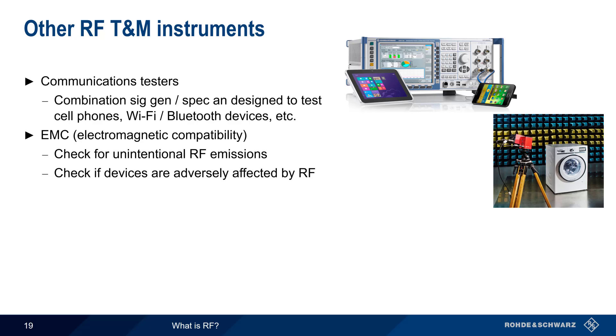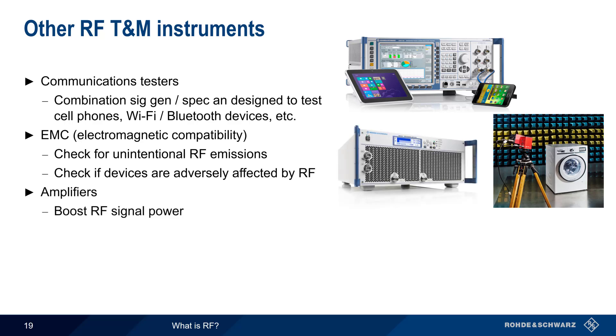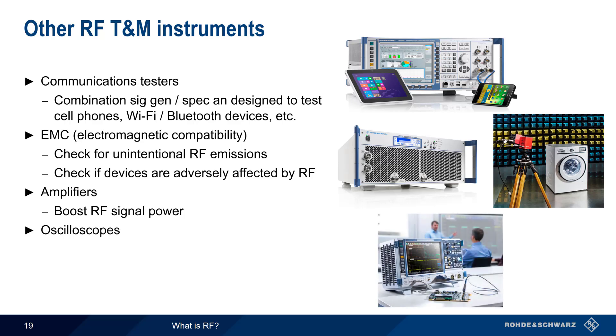Closely related to EMC testing are amplifiers, which boost RF signal power, and therefore can be used to create the high power RF signals that are needed in some EMC tests. And finally, oscilloscopes are another category of RF test and measurement instruments. Scopes are most often used for non-RF electrical testing, but can also be used in numerous RF applications as well.